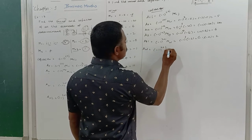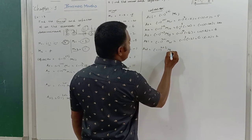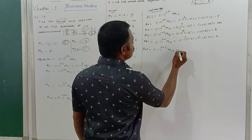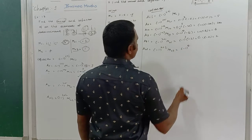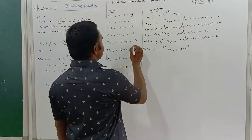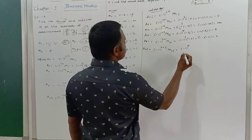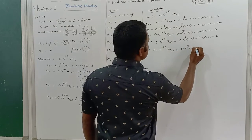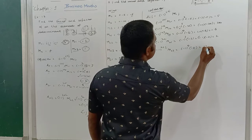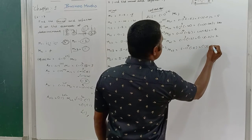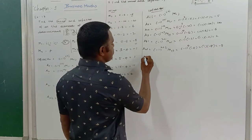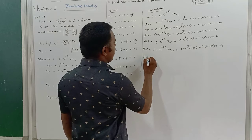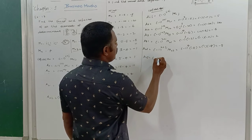A22 = (-1)^(2+2) × M22 = (-1)^4 × (minus 8) = +1 × minus 8 = minus 8.